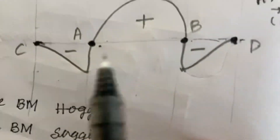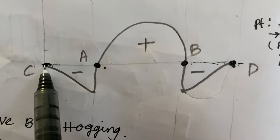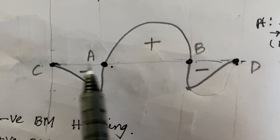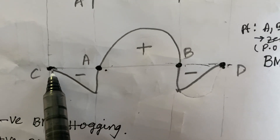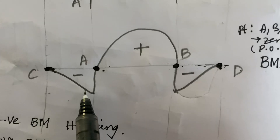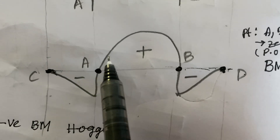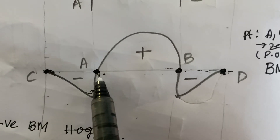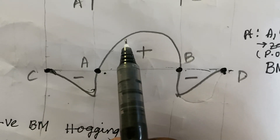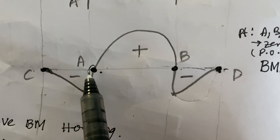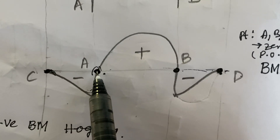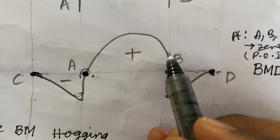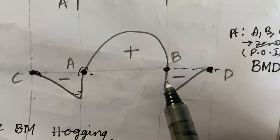If you look here, at point A — between support A and support C — a curve is reaching from negative to positive. While moving, it is touching zero; that is the point of contraflexure at point A. Again, from positive it reaches negative, touching the zero point once more.